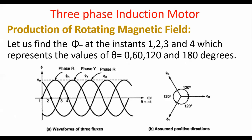Now observe the waveform of the three-phase winding showing φR, φY, and φB. The vector diagram shows φY lagging behind φR by 120 degrees, and φB lagging behind φY by 120 degrees — so these three windings are displaced from each other by 120 degrees.